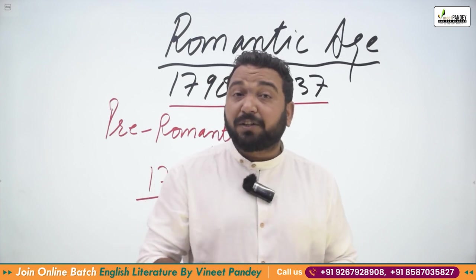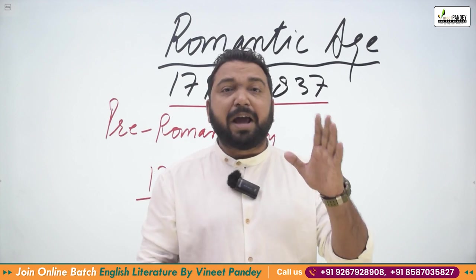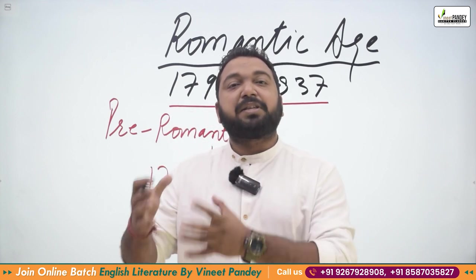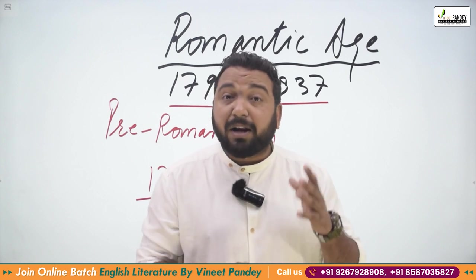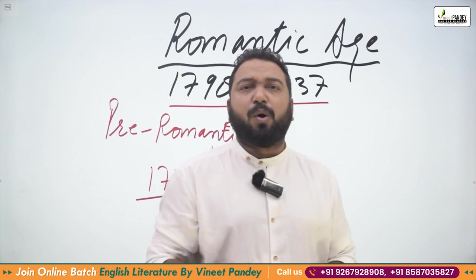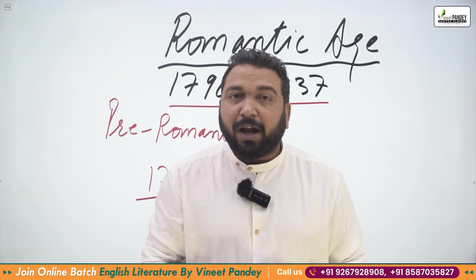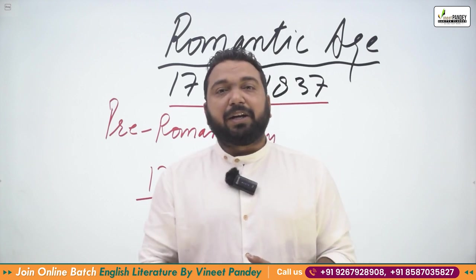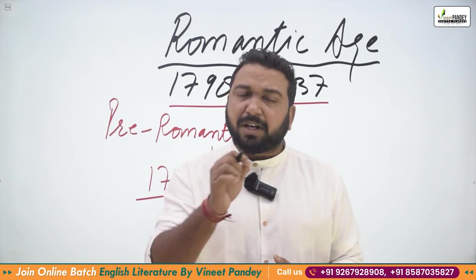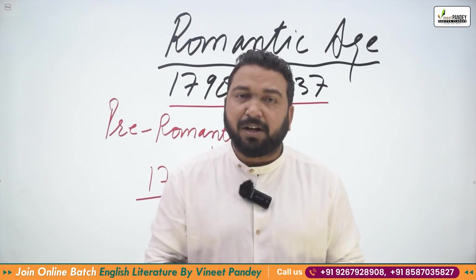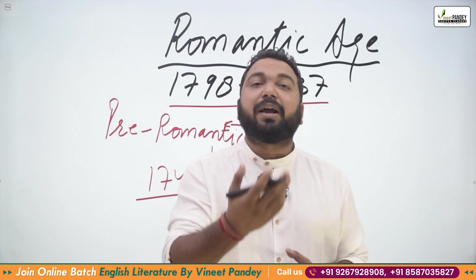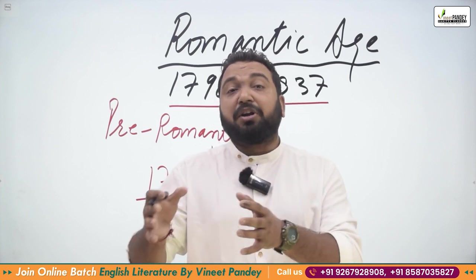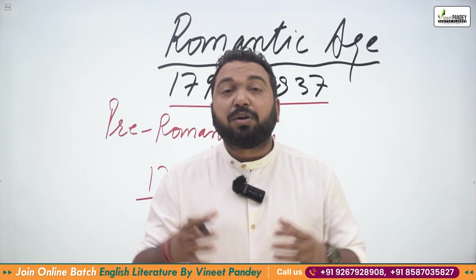The Puritans formed a government known as the Iron Government, the Government of the Saints, also called the Parliament of the Saints, or the Protectorate. Cromwell became the Lord Protector. In 1658, when Cromwell died, his son was not a proper successor and could not handle the empire.